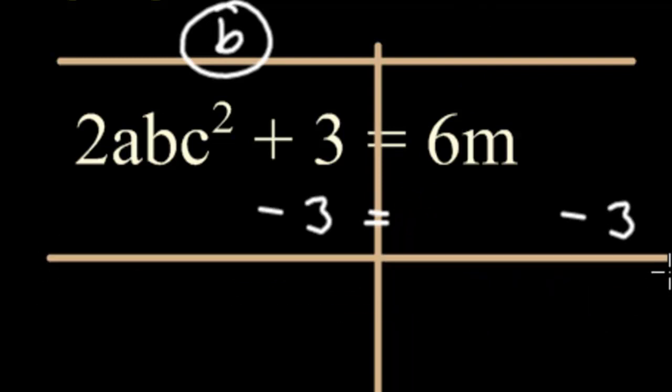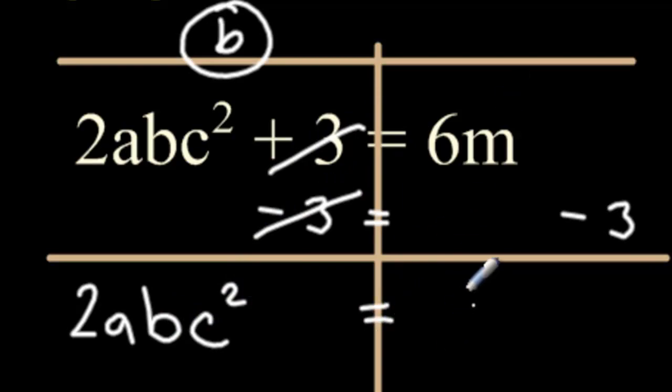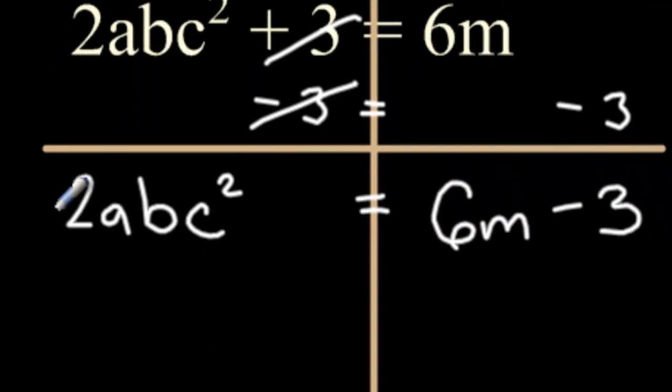The 2abc squared we didn't touch, so I'm just going to rewrite that down because it drops down. The 3 and the negative 3, those cancel out. 6m we didn't touch, that drops down. The negative 3 we didn't touch, that drops down.